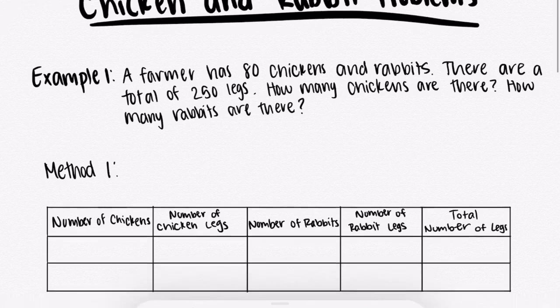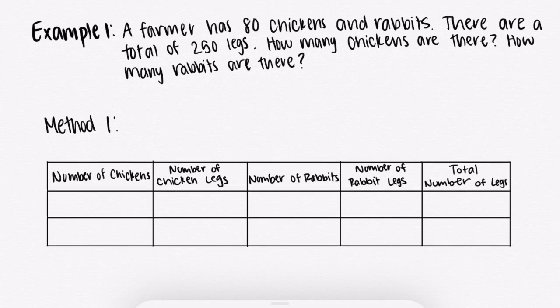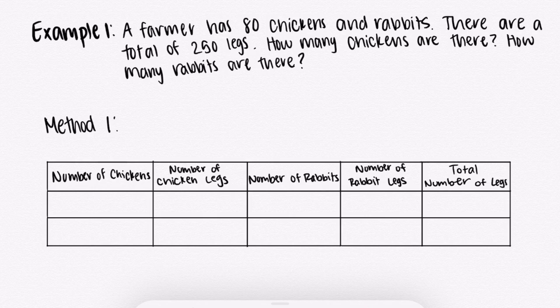In order to solve this problem, the first method we can use is to make a table. This table needs to have the number of chickens and the number of chicken legs, the number of rabbits and the number of rabbit legs, and the total number of legs from both. The first step is to randomly guess a number of chickens and rabbits, so I'm going to say there are 40 chickens and 40 rabbits.